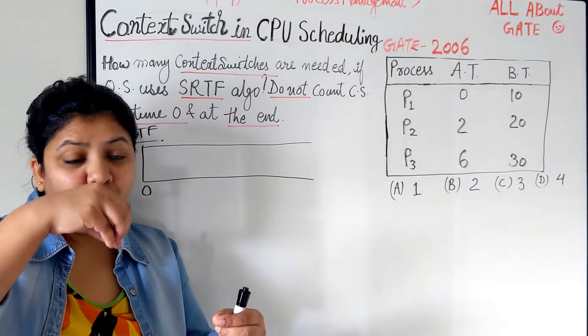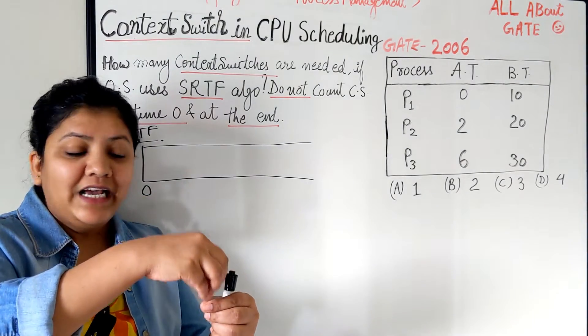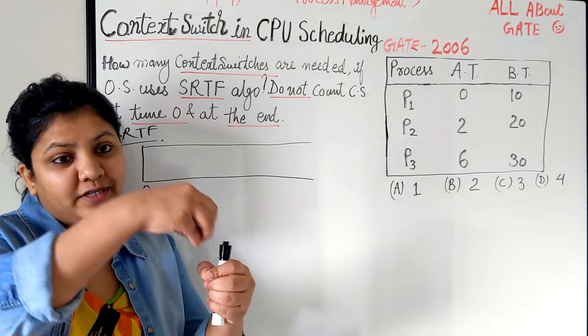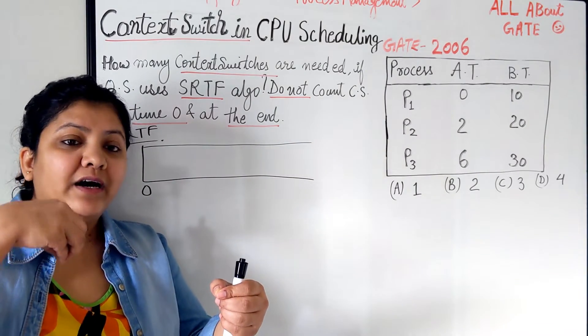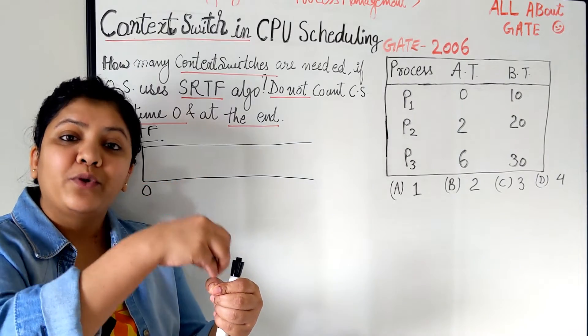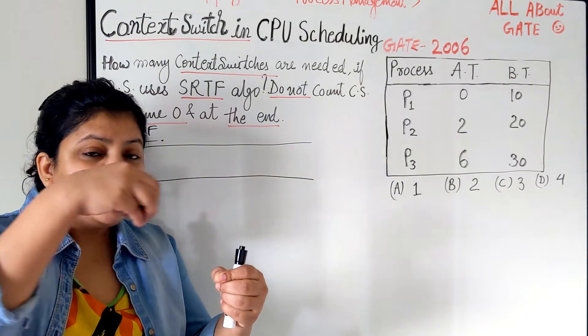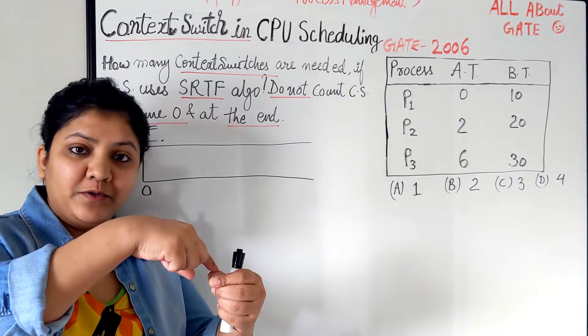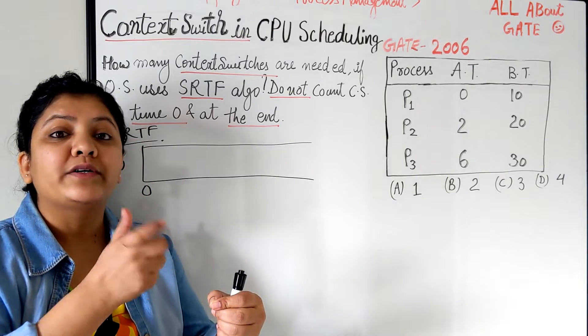So the PCB of the running process has to be saved and the PCB of the new coming process has to be loaded. So this saving PCB and loading PCB job is nothing but the context switch.